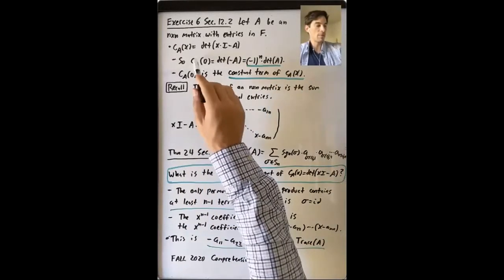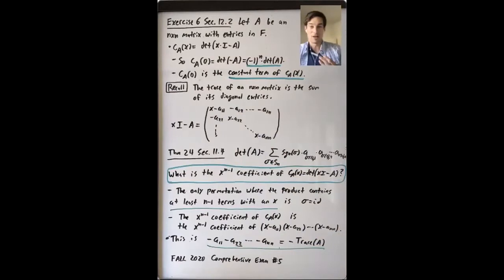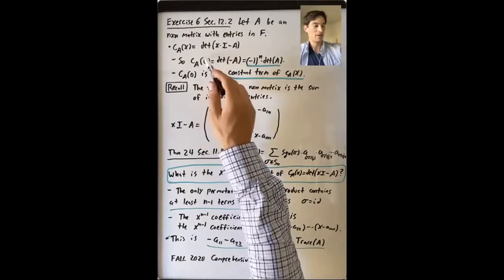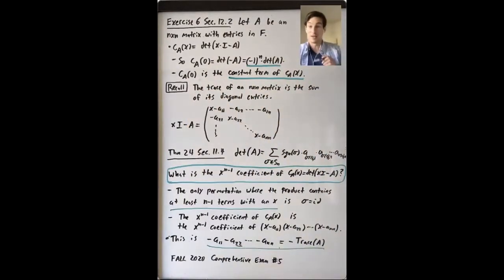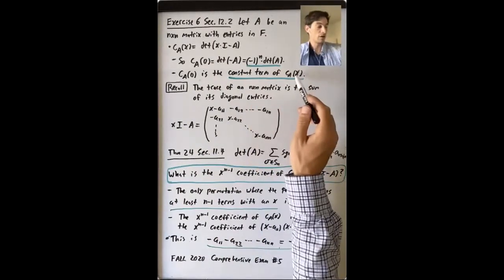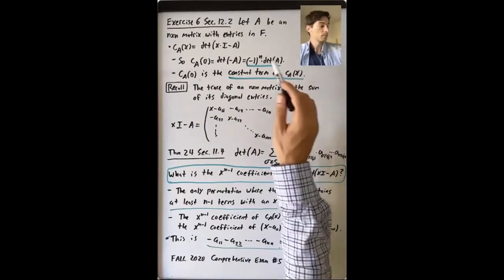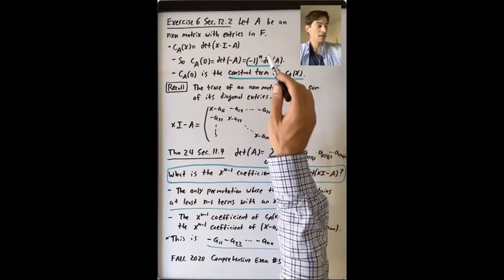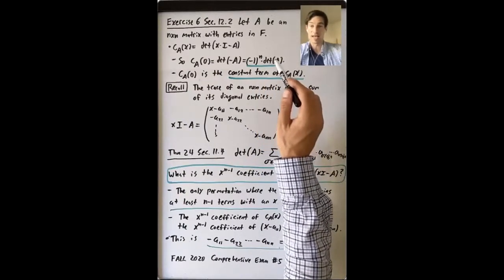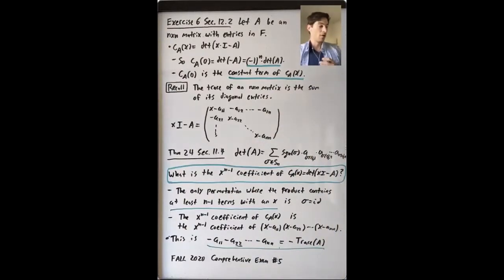But if you take a polynomial in X and you plug in zero, you also get the constant term of that polynomial. So by evaluating this polynomial at zero in two different ways, we see that the constant term of the characteristic polynomial is (-1)^n times the determinant of the matrix A.